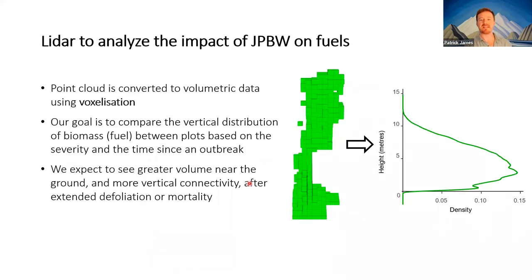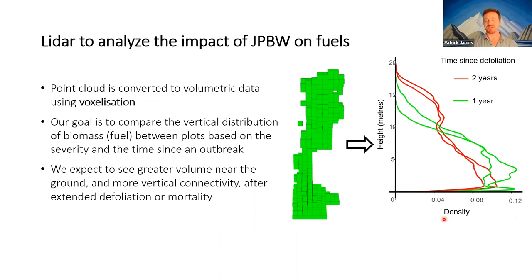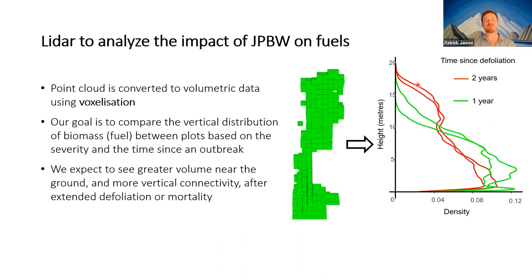Here's an example at the scale of an individual tree — a point cloud converted to voxels summarizing information within them. We can then summarize the density of voxels going vertically. We'd expect that as time progresses from the outbreak, there'd be a slumping of biomass — biomass effectively transferred toward the forest floor due to the insect outbreak. We have some initial results that are contradictory to our hypothesis: a stand affected for only one year has greater biomass near the floor, while the stand affected for two years has more biomass up top. Only two stands so far, shown to illustrate what the data looks like.